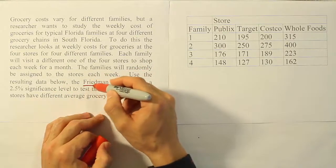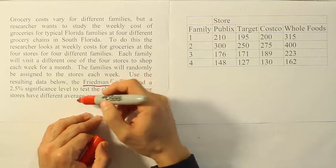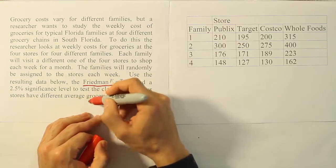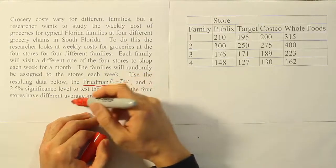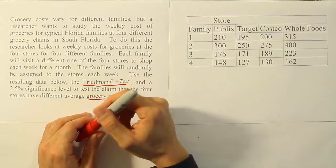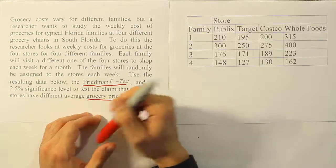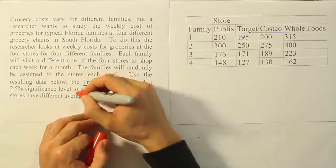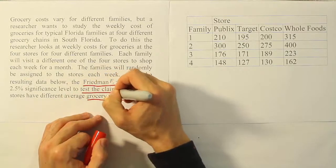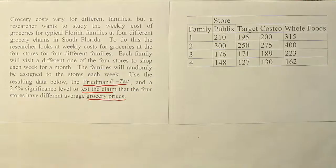Each family will visit a different one of the four stores to shop each week for a month. The families will randomly be assigned to the stores each week. Use the resulting data below with the Friedman FR test and a 2.5% significance level to test the claim that the four stores have different average grocery prices.